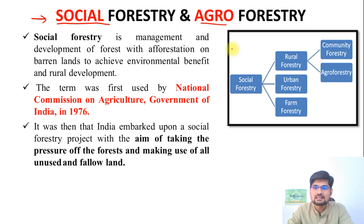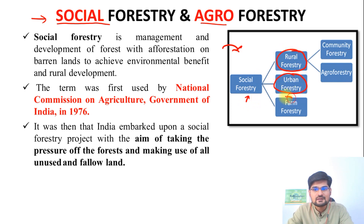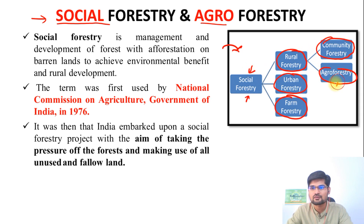Let's look at this particular flow diagram, which can be useful for your answer writing as well. Under social forestry we have three parts: one is called rural forestry, one is called urban forestry, and one is essentially farm-based forestry. Under rural forestry we also have something called community forestry and agroforestry. This is where social forestry and agroforestry are linked to rural forestry — that's important to understand.